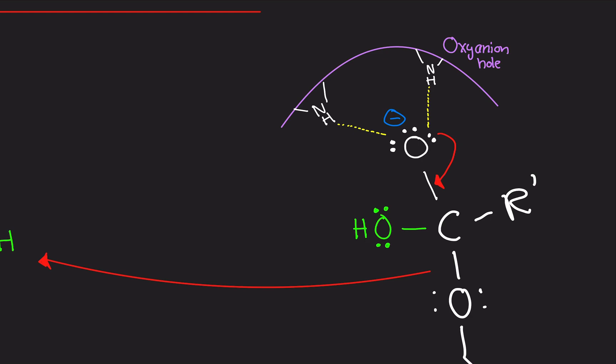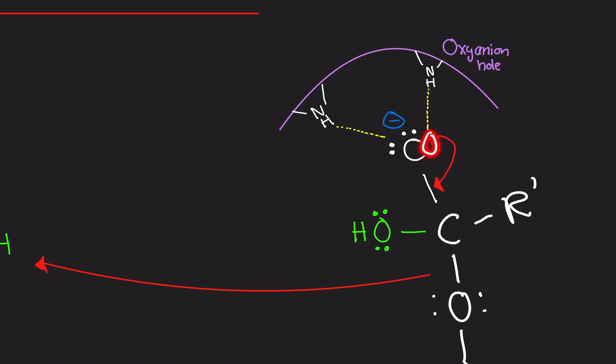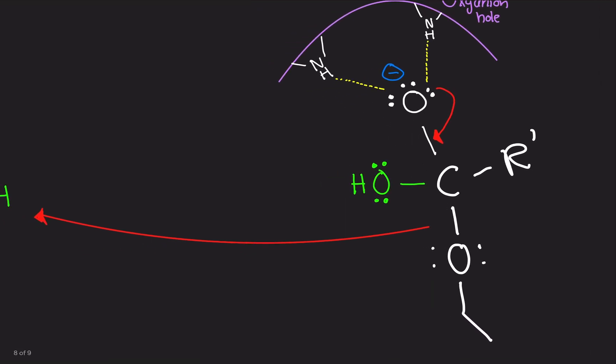But eventually it's going to collapse. So the electrons, the lone pair of electrons are going to create a double bond. What's going to leave then? Because carbon cannot have five bonds. If you have a double bond here, then you have five bonds.